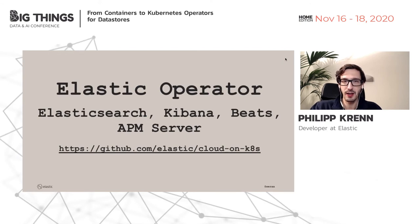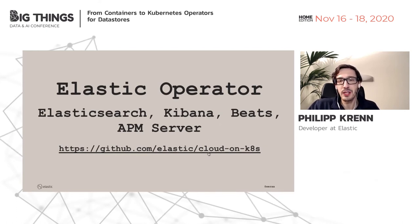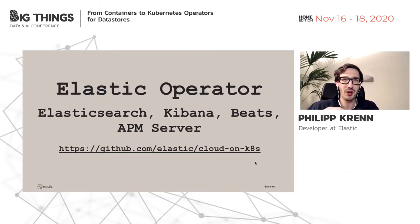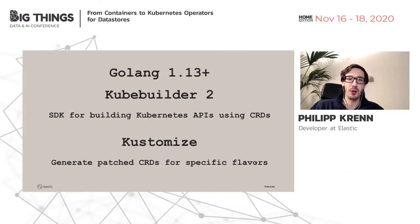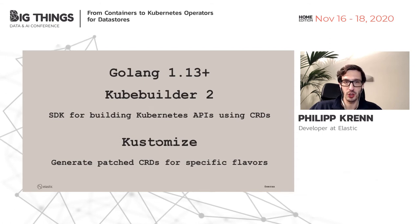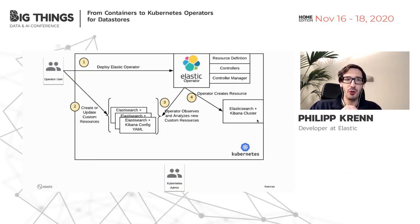Our operator has five or more full-time developers, which is quite a lot — you should see that as an advantage so you don't have to invest those resources yourself. The operator is GA and supports Elasticsearch, Kibana, all the Beats, and the APM server. It's not called 'operator' but rather ECK — Elastic Cloud on Kubernetes — because it gives you a cloud-like experience. It's built with Golang using Kube Builder, which talks to the Kubernetes API. We also use Kustomize to patch things for older Kubernetes versions we still support.